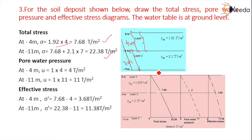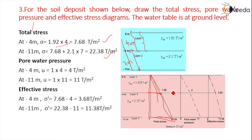Coming to pore water pressure — if you draw the diagram, layer 2 and layer 3 are shown. Layer 1 pore pressure is 0. At 4 meter depth, pore water pressure = 1 × 4 = 4 ton per meter square. At 11 meter level, pore water pressure = 1 × 11 = 11 ton per meter square.